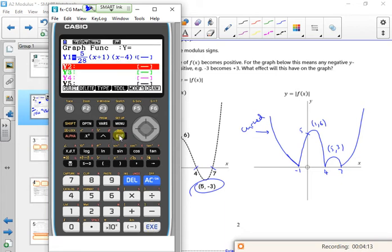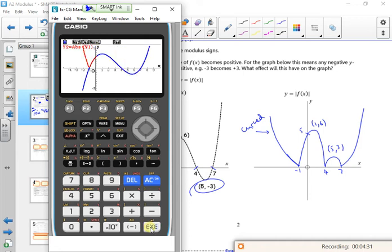So now I'm going to do the modulus of it. Same idea, I'm going to do option numeric abs, and I could write out the whole equation, but I'm just going to get it for y1, so I'm going to press f1 for y, and then a 1 in there.